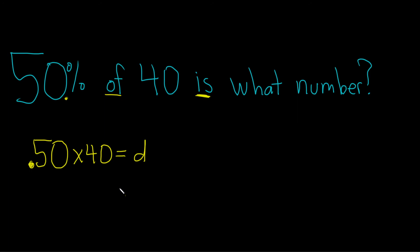Now let's go ahead and put this in our calculator: 0.50 times 40. I got 20, so 20 is equal to little d.